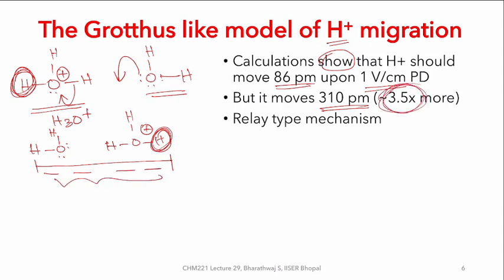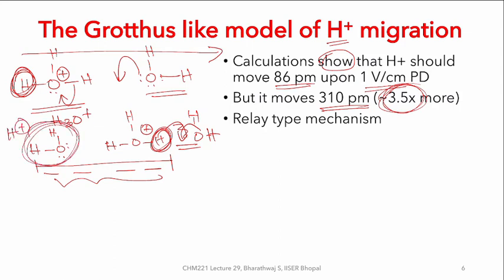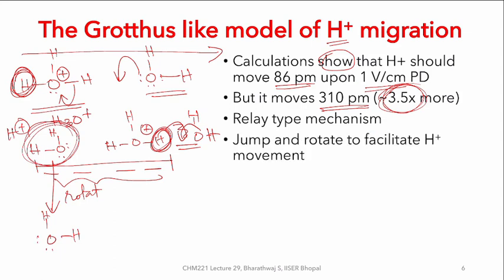This accounts for about three and a half times more movement. If you add another H₂O molecule, one can keep having the relay mechanism such that the lone pair of electrons keeps abstracting so that the H⁺ ends up moving much farther in a much shorter period of time for a given potential difference applied. However, one must understand that if another H⁺ has to come, the given water molecule cannot take it right away and therefore a rotation has to happen so that the orientation is appropriate for further migration.